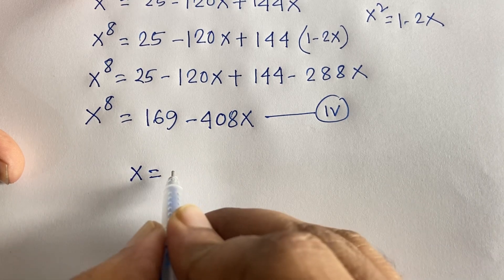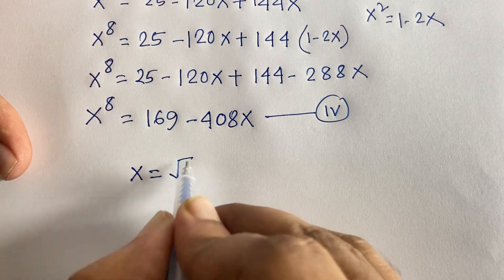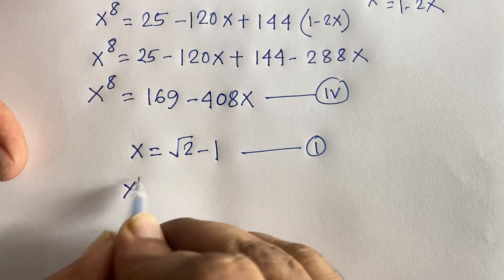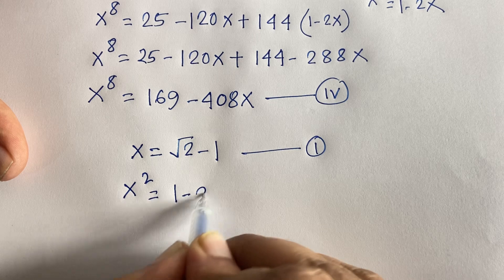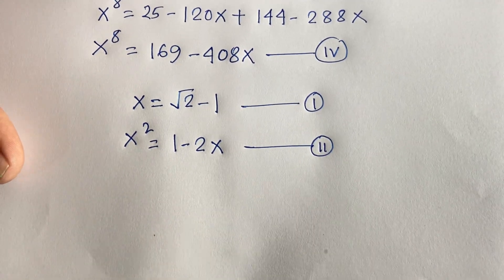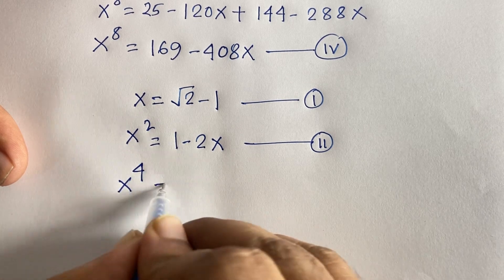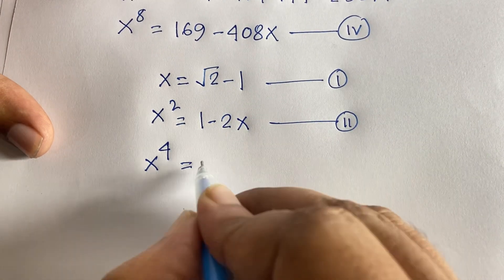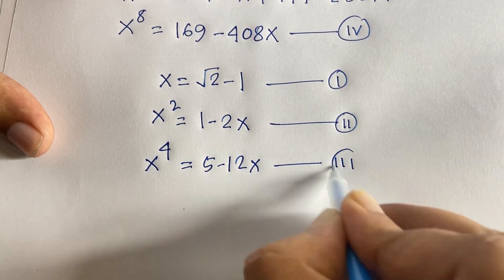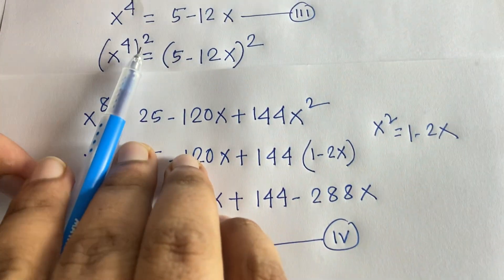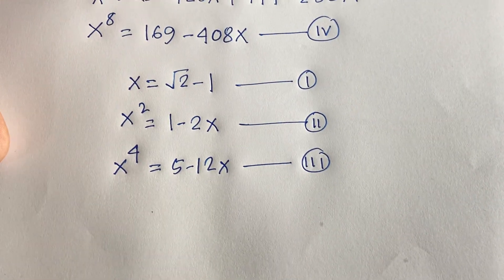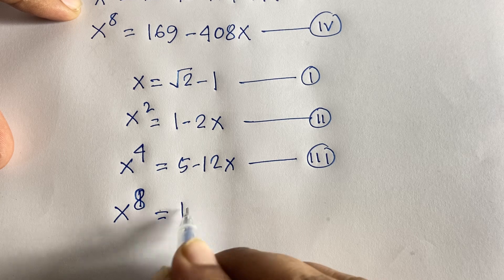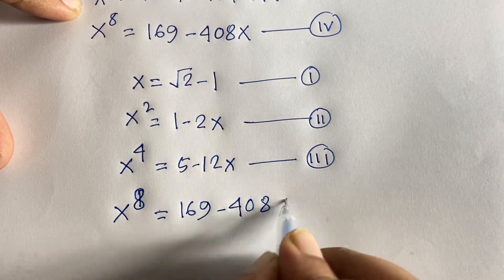So summarizing all equations: first equation, x = √2 - 1; second equation, x² = 1 - 2x; third equation, x⁴ = 5 - 12x; fourth equation, x⁸ = 169 - 408x.